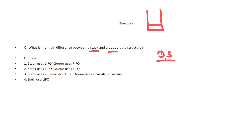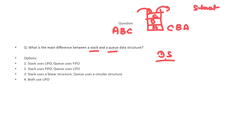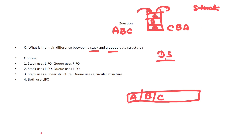In a stack, data goes in sequentially — first A, then B, then C — and when popping out, it comes out in reverse: C, B, A. That is LIFO. In a queue, data enters as A, B, C and is also removed in the same order — A first, then B, then C — which is FIFO, first-in-first-out.